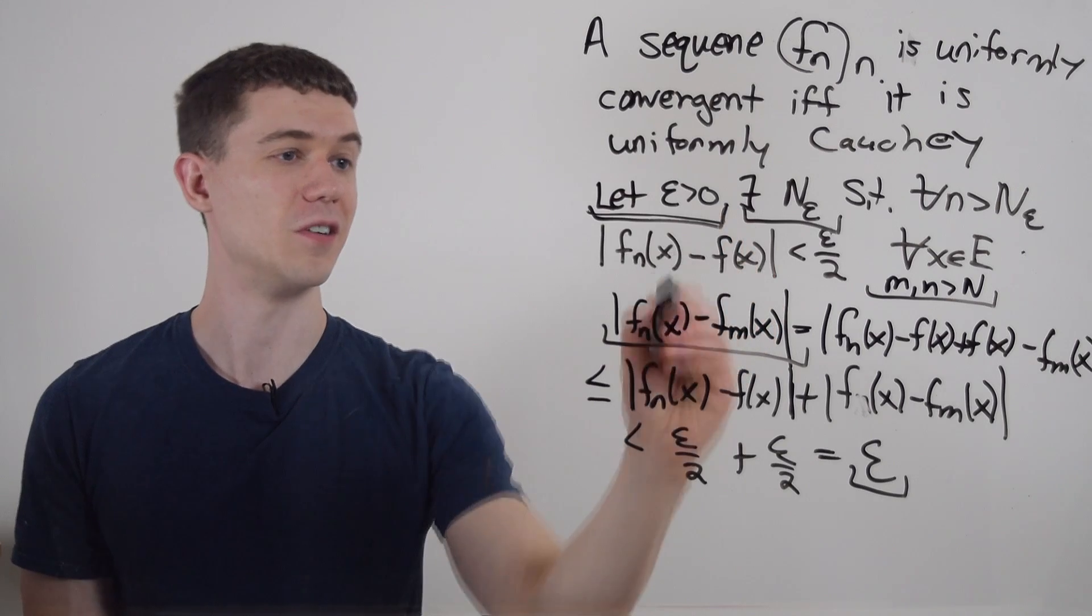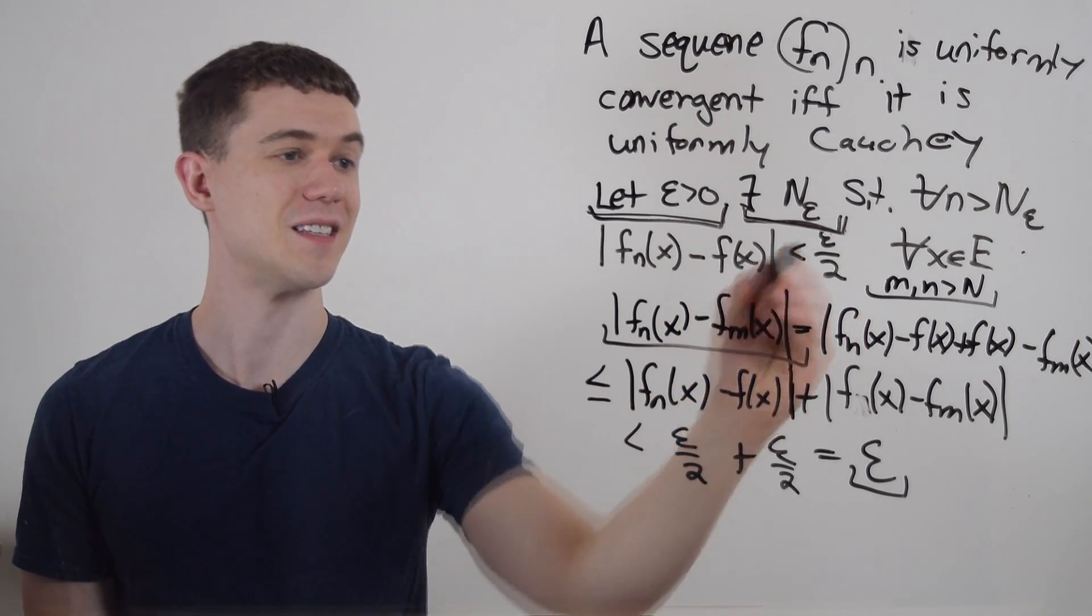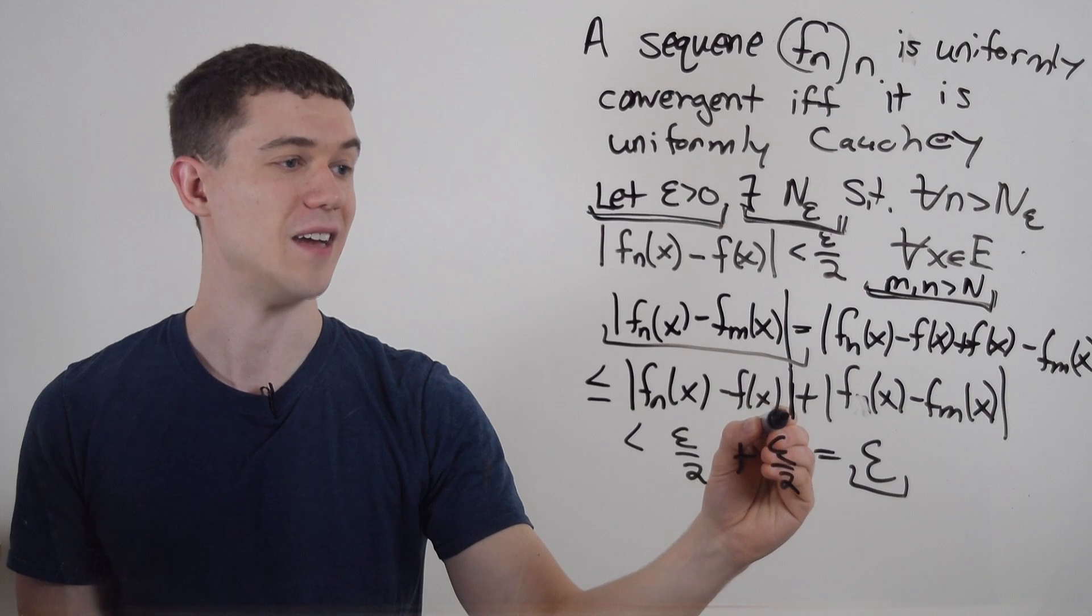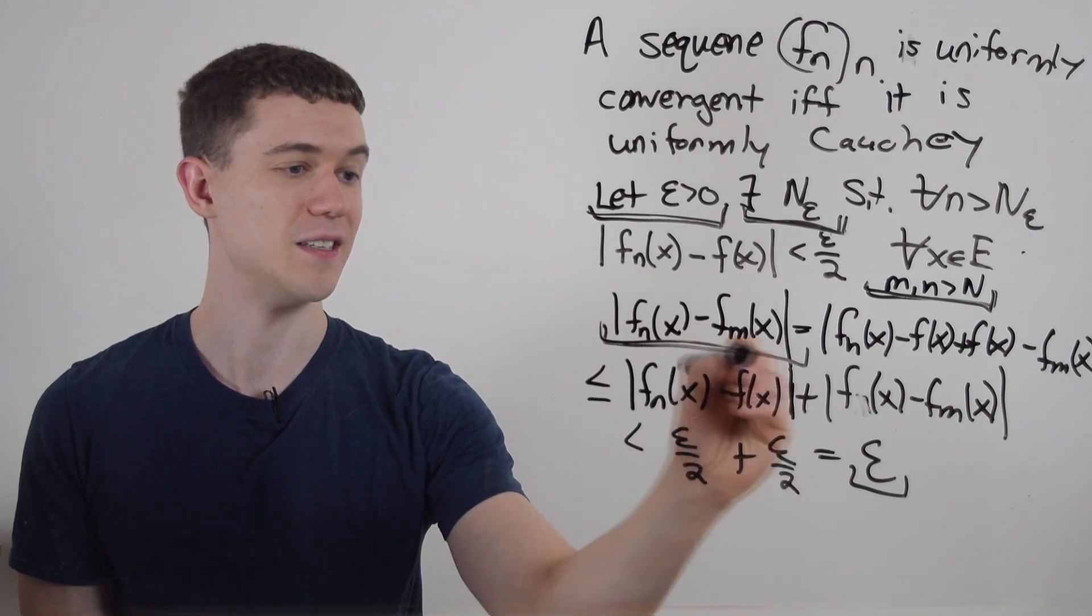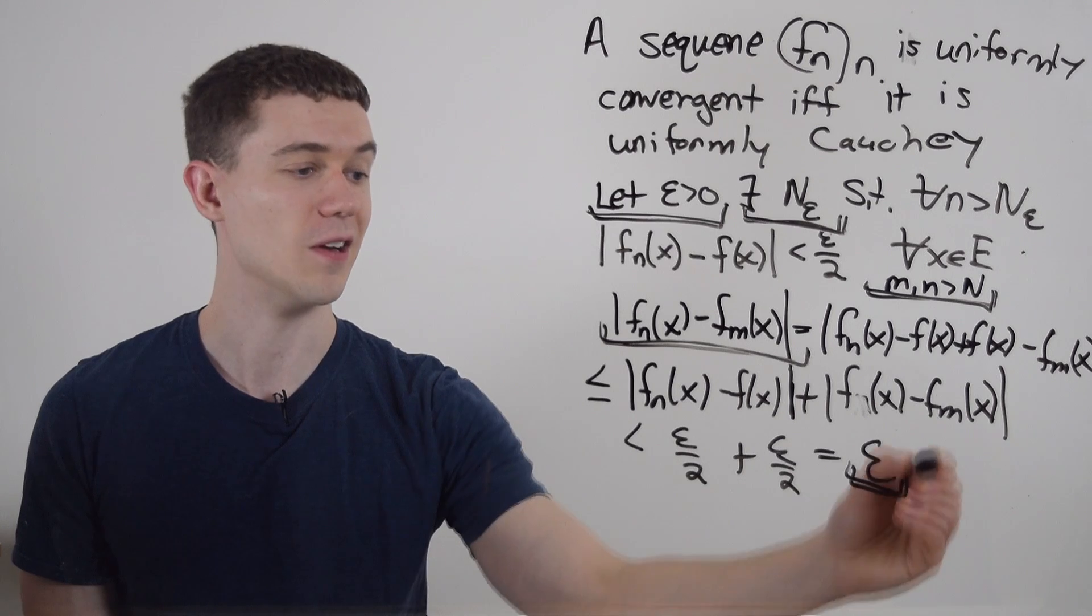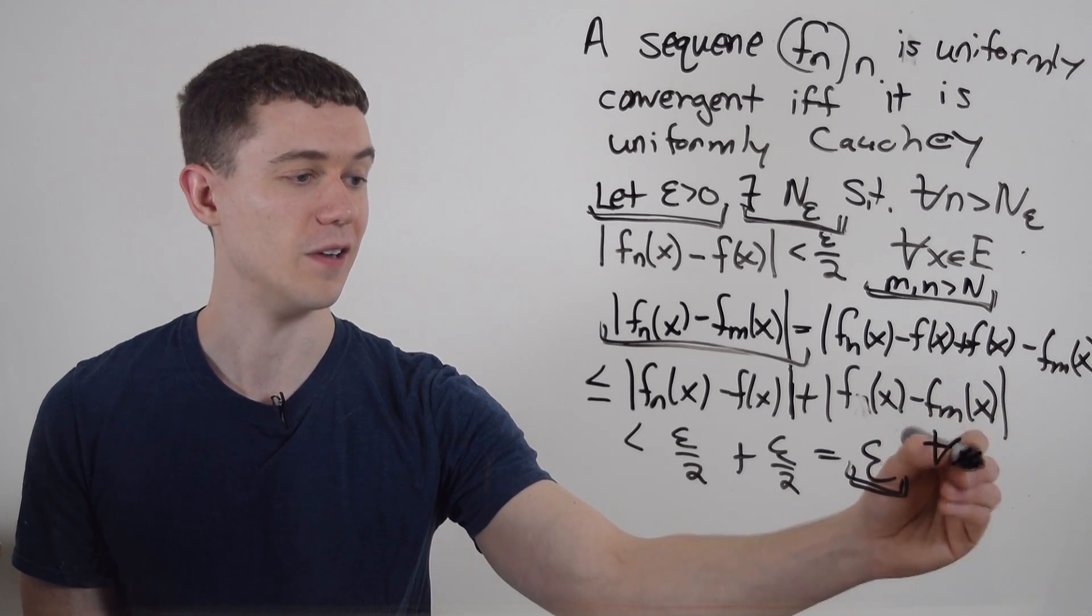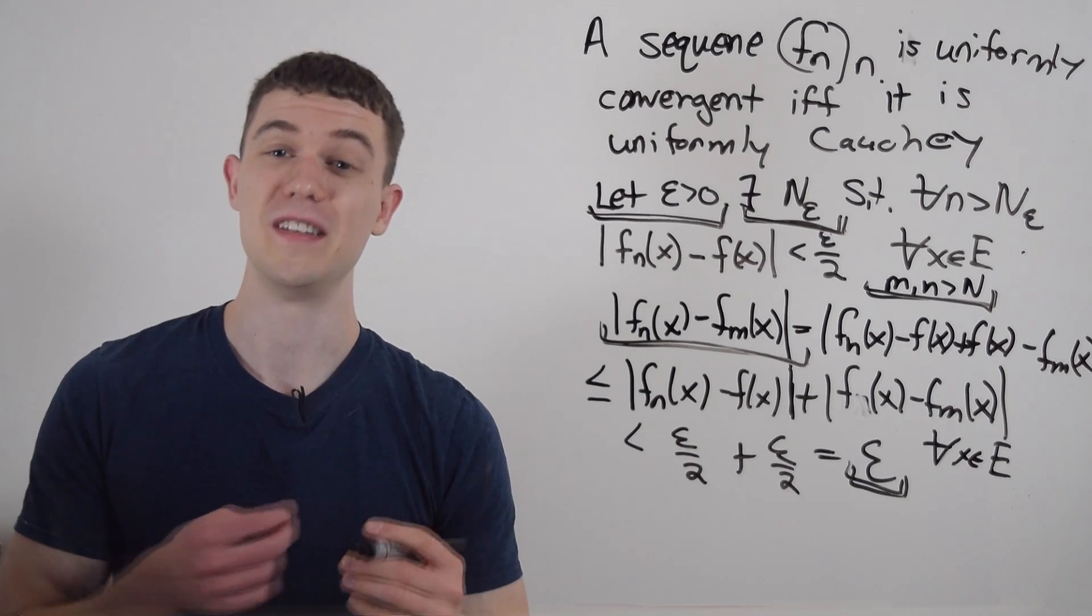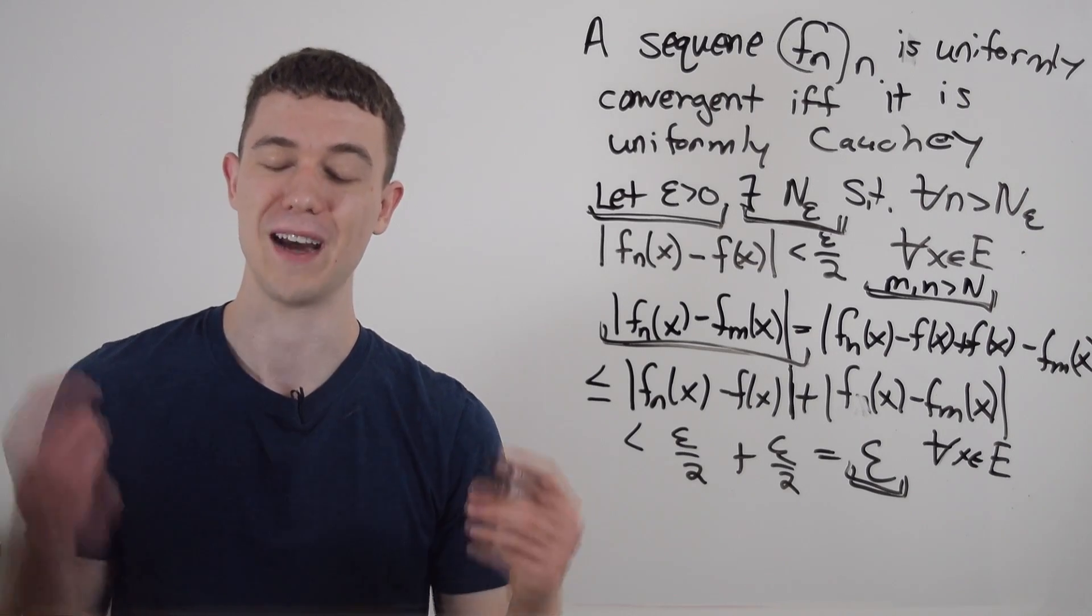So I've shown for all epsilon greater than zero, there exists a capital N such that for all m and n greater than N, the distance between f sub m and f sub n is less than epsilon. And this is for all x in the domain E. This is what it means for a sequence of functions to be uniformly Cauchy.